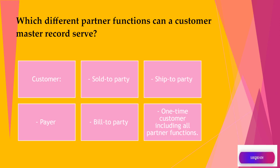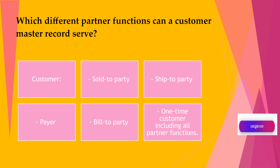Which different partner functions can a customer master record serve? Customer, sold-to-party, shipped-to-party, payable-to-party. One-time customer including all partner functions.